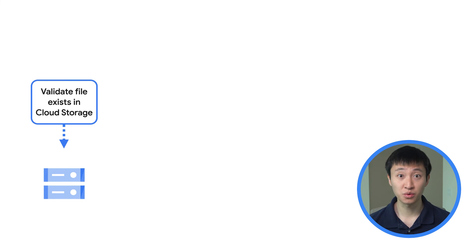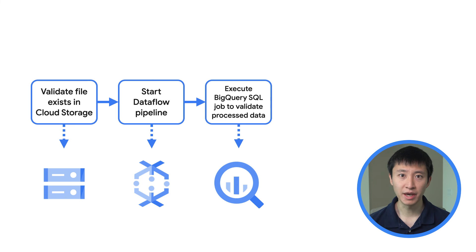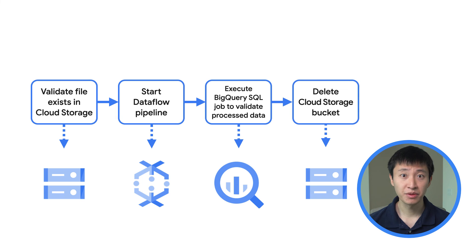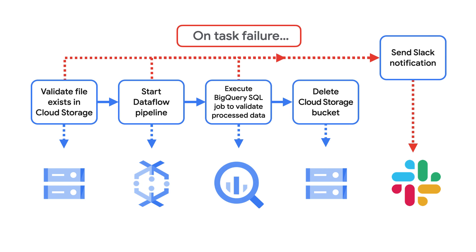Let's take a look at an example use case of how Composer can be used to orchestrate a big data pipeline. Composer tasks are defined in the form of a Python-directed acyclic graph, or DAG. First, we monitor a Cloud Storage bucket and trigger the pipeline as soon as the file appears. Then, we kick off a Cloud Dataflow pipeline. Next, we execute a BigQuery SQL job to validate the processed data. And finally, we delete the object from the Cloud Storage bucket since we no longer need it. Along the way, if anything goes wrong, a Slack notification can be sent to team members.